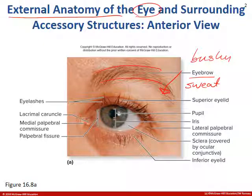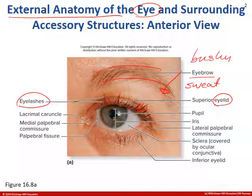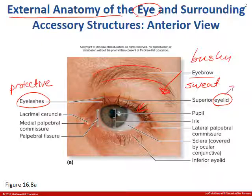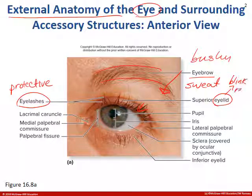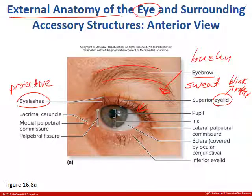Next up we have eyelid and eyelashes. Both of these, their job is protective. If anything comes close to your eye it can initiate a blink reflex and stop the item from penetrating your eye. We need our eyes to see in order to hunt and for food. Lots of sensory information is taken in by our eyes so we're trying to protect them.